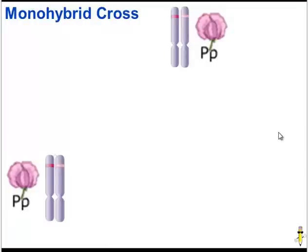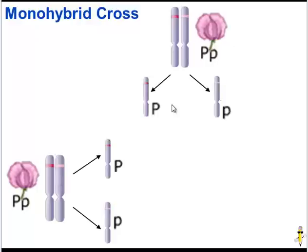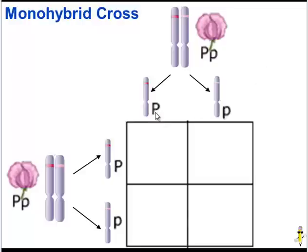Now let's use all of this information to predict and explain inheritance patterns. We're going to do a monohybrid cross. It's a cross because we are breeding two different parental organisms. It's monohybrid because both parents are hybrids — they each have two different alleles. And we're only concerned with one trait: flower color. Given that these parents are diploid with their homologous chromosomes, we need to think about what gametes they can produce. Each parent can produce a gamete with a dominant P or a recessive P. To see all possible combinations, we'll make a Punnett square.